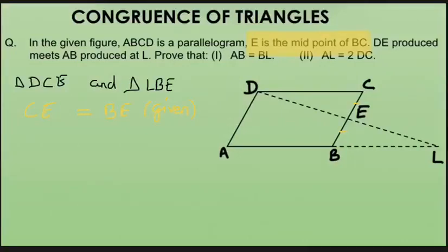Nothing else is given directly. ABCD is a parallelogram, so we use that to find the remaining equal parts. In a parallelogram, opposite sides are parallel, and when two parallel lines are intersected by a transversal, we get alternate angles which are equal.